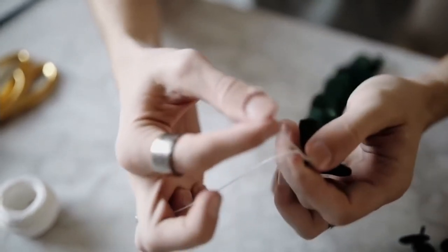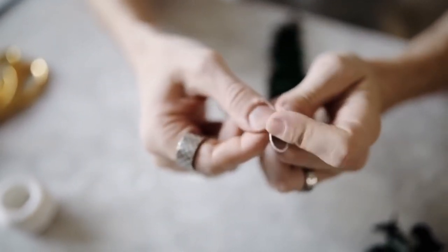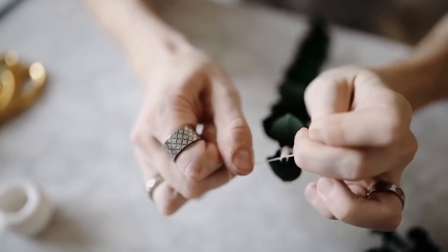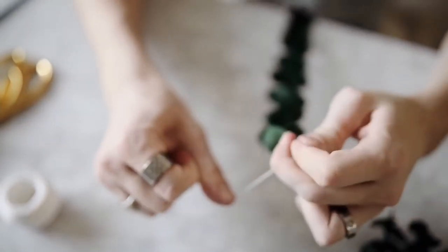Tie off your string at the end and leave probably about two to three feet of excess string. That way you can vary the lengths as you apply it to our wooden dowel a little bit later.